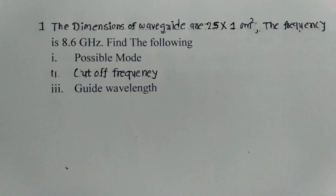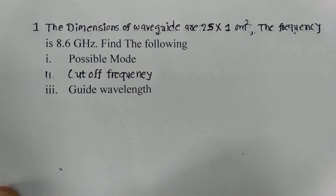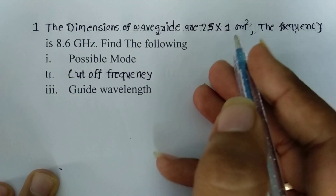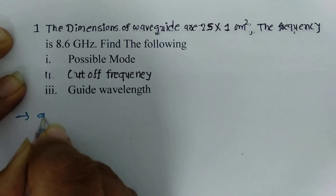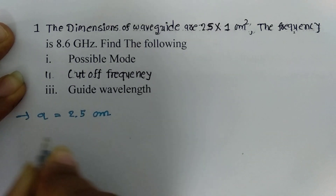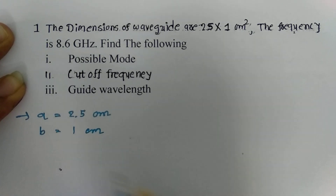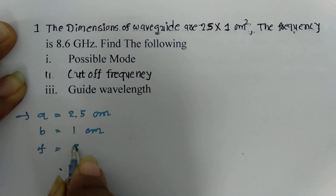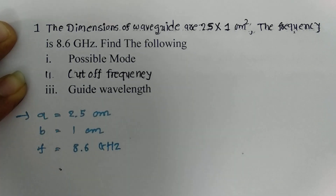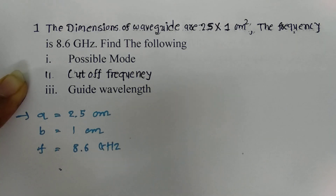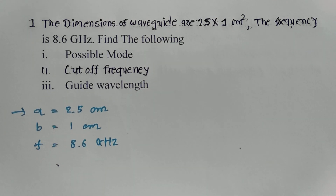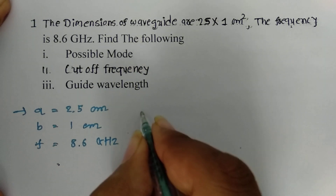In this session, I will explain an example based on rectangular waveguide. The dimensions of the waveguide are given as 2.5 × 1 cm². That means the value of A is 2.5 cm and the value of B is 1.1 cm. The frequency of operation is 8.6 GHz. We are required to find three things: possible modes, guide wavelength, and cutoff frequency for all those possible modes. Based on the given quantities, let us first calculate the operating wavelength.